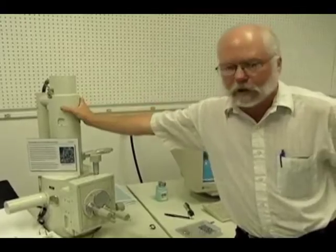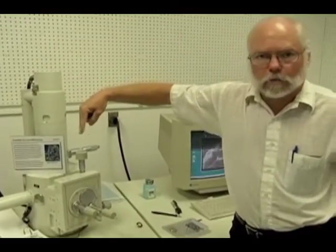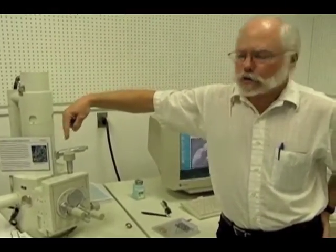There are magnets inside the column which raster scan the electrons across the specimen.